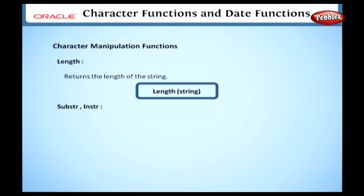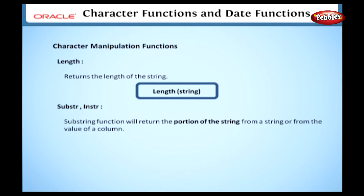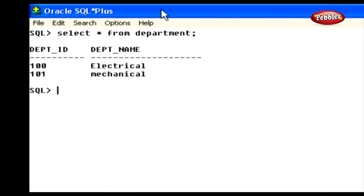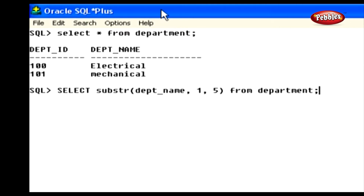Let's see the SUBSTR and INSTR functions. The SUBSTR function returns a portion of the string from a column or string value. In the syntax, you specify the column name or string, the start position of the extraction, and the number of characters to extract. For example: SELECT SUBSTR(department_name, 1, 5) FROM department. Here, the starting position is 1 and the number of characters is 5, so this function extracts the first 5 characters of department_name in all rows from the table department.